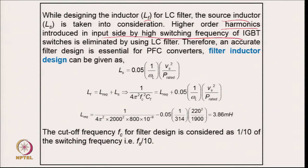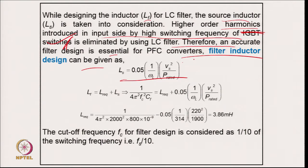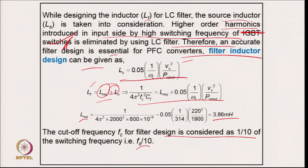Higher-order harmonics introduced on the input side by the high-frequency switching device are eliminated by the LC filter; therefore, an accurate filter design is essential for the PFC converter. The filter inductor is calculated from the standard relation: total inductance equals source inductance plus required inductance. Putting in values gives 3.86 mH, with the cutoff frequency taken at one-tenth of the switching frequency.